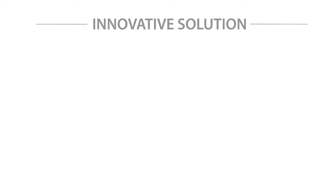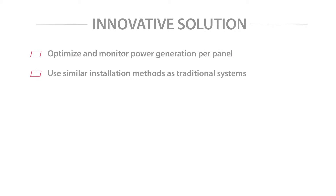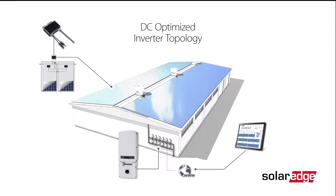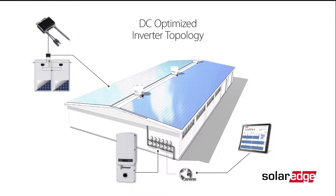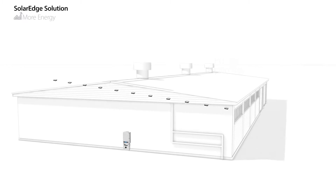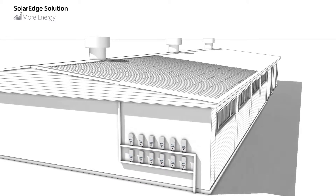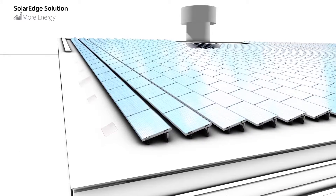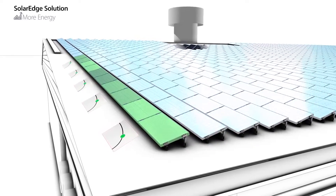When we started to develop the SolarEdge solution, we looked at the challenges posed by traditional systems and defined three goals: to optimize and monitor power generation of each panel; to use the same installation methods and components used to install traditional inverter systems; and to minimize long-term operation and maintenance costs. We developed a topology that meets all of these goals — the SolarEdge DC Optimized Inverter Topology. Our solution splits the traditional inverter functionality into two products: the power optimizer and a simplified inverter. The power optimizers are located on the panels, turning them into intelligent panels. These power optimizers maximize system output by providing panel-level tracking and real-time adjustments of current and voltage to the optimal working point of each panel.